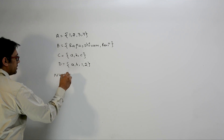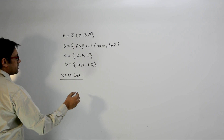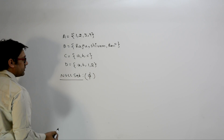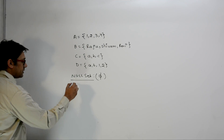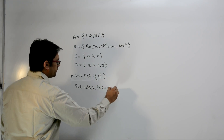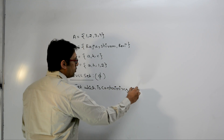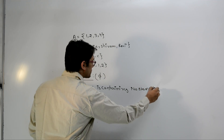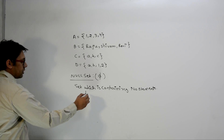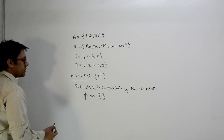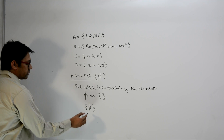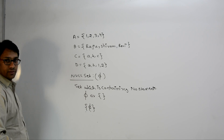A null set is generally denoted by phi (φ). A null set is a set which contains no elements. We can denote a null set as φ, but if we denote it as {φ}, that means it is a set containing one element — and that element is a null set.